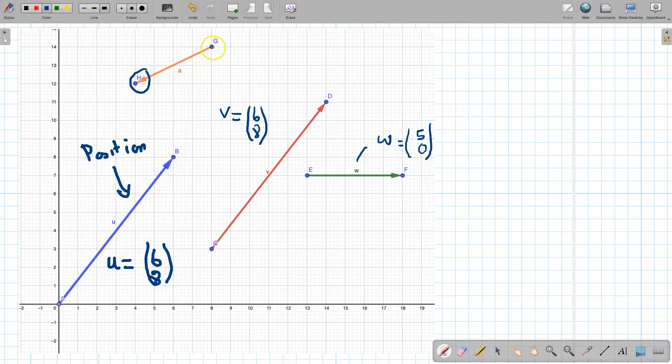So with g, or vector a rather, it starts at position g, we're going 1, 2, 3, 4, but that's backwards 4, so it's minus 4. And then we come down 2 units, so it's minus 2.